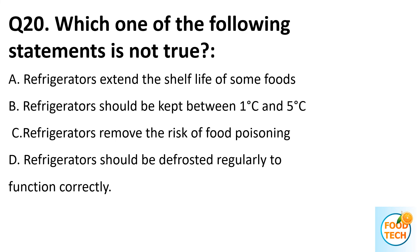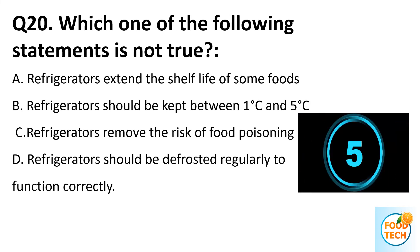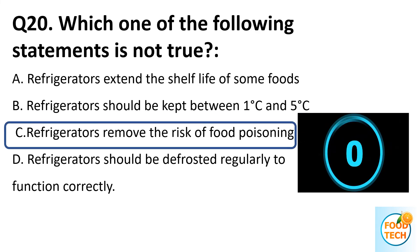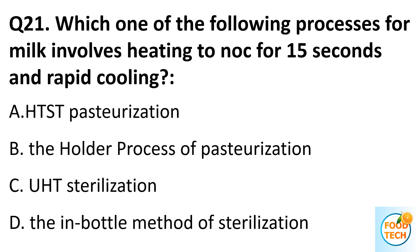Question 20. Which one of the following statements is not true? A. Refrigeration extends the shelf life of some foods. B. Refrigerators should be kept between 1 degree Celsius and 5 degrees Celsius. C. Refrigeration removes the risk of food poisoning. D. Refrigerators should be defrosted regularly to function correctly. Answer C. Refrigeration removes the risk of food poisoning.